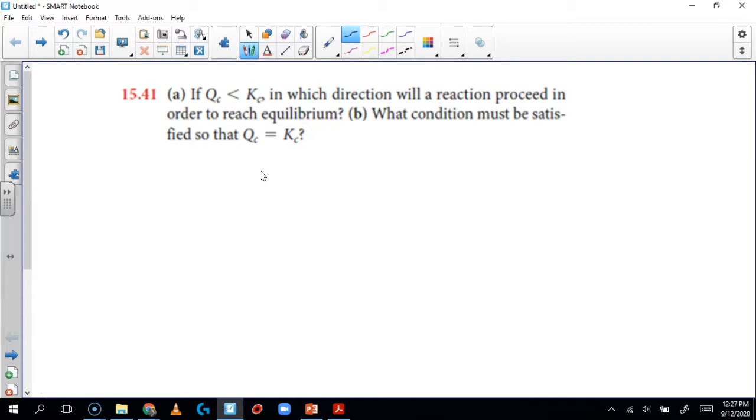Okay, so let's get started. It says here, if Q is less than K, which direction will the reaction proceed? So let's write this like this. When we have Q and K, we want to have reactants, and reactants always react to form products. And let's keep in mind that the equilibrium constant and Q is products over reactants.